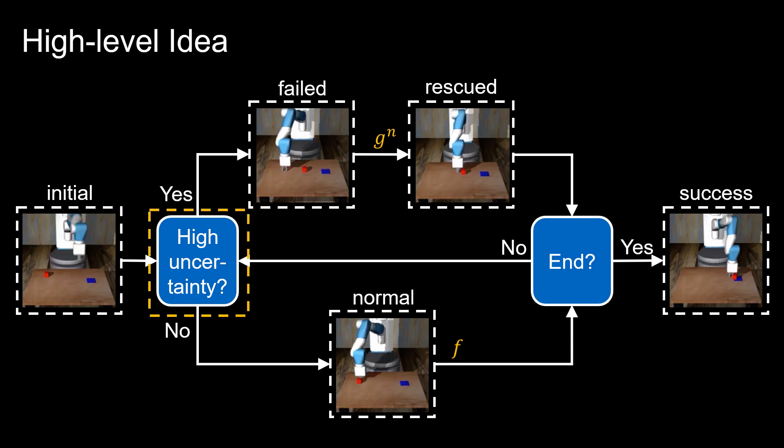Starting from an initial state, when the uncertainty is high, we switch to a recovery mode and deploy a recovery policy G for N steps. And then depending on the uncertainty, we switch back to the normal policy F, and so on.